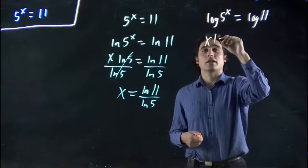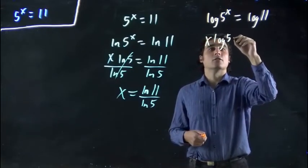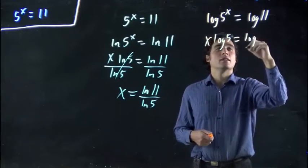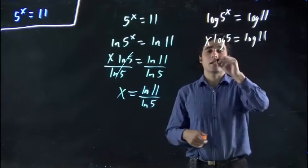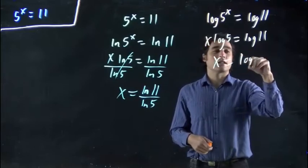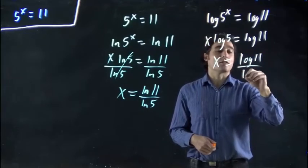Same thing. x gets brought down in front. The same exact rules still apply. And doing the same cancellation, I get the same basic idea except with logarithms.